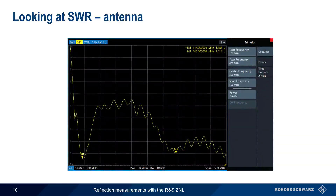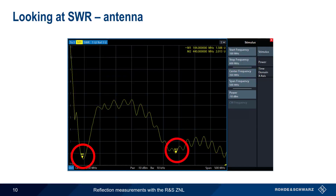After we attach our antenna to port 1 of our analyzer and place it on a metallic surface, we're ready to make some reflection measurements. Following the same steps as when measuring the dummy load, we set our frequency range from 100 to 600 MHz and set two markers — one on 144 MHz and one on 440 MHz. Looking at our marker values, SWR is about 1.6 at 144 MHz and just over 2.0 at 440 MHz, which is acceptable for most mobile radio applications.